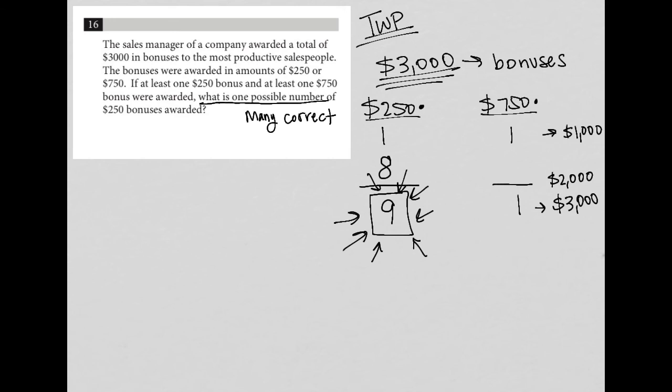So let's say instead—let's go back to $250 and $750. Let's say I wanted to give out three of these. So if I gave out three $750 bonuses, that's a total of $2,250, meaning I have $750 remaining in order to have given out a total of $3,000.